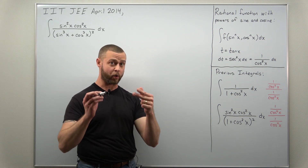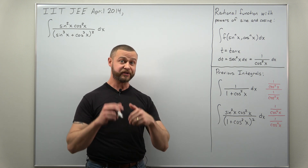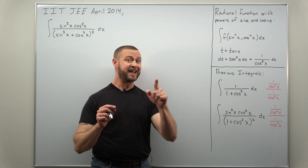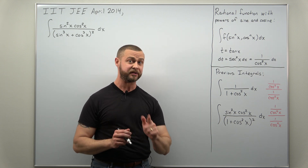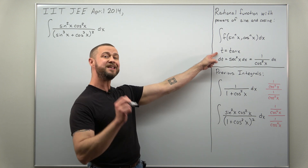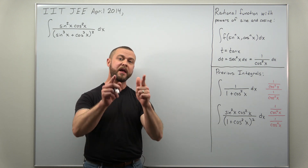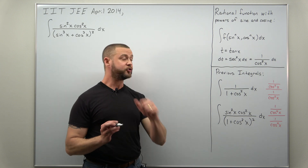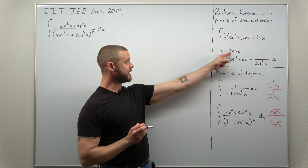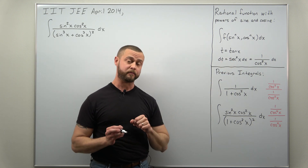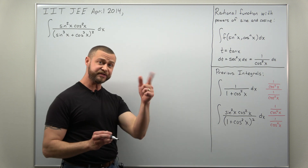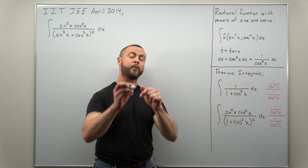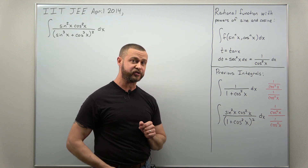The substitution that works for these types of integrals, which involve rational functions containing powers of sines and cosines, is t equals tangent of x. The connection to why we use that substitution is that the derivative of tangent is secant squared. I like to think of secant squared equivalently as 1 over cosine squared, and we're going to use that to guide us through the algebra.